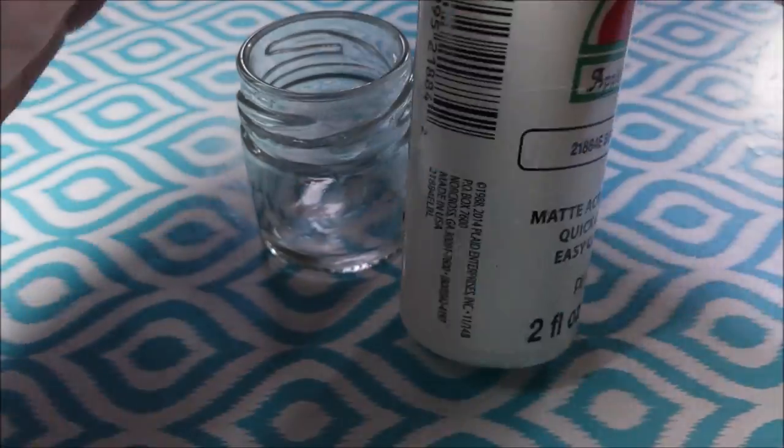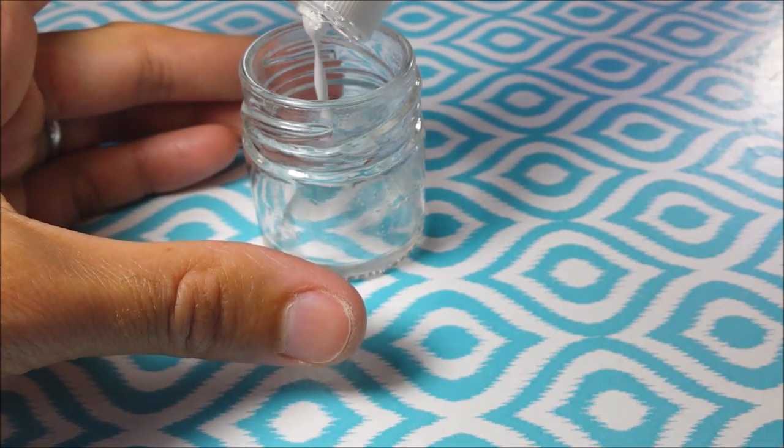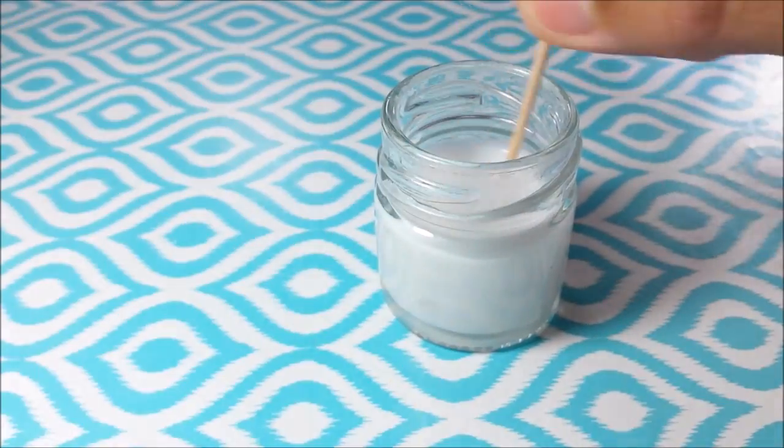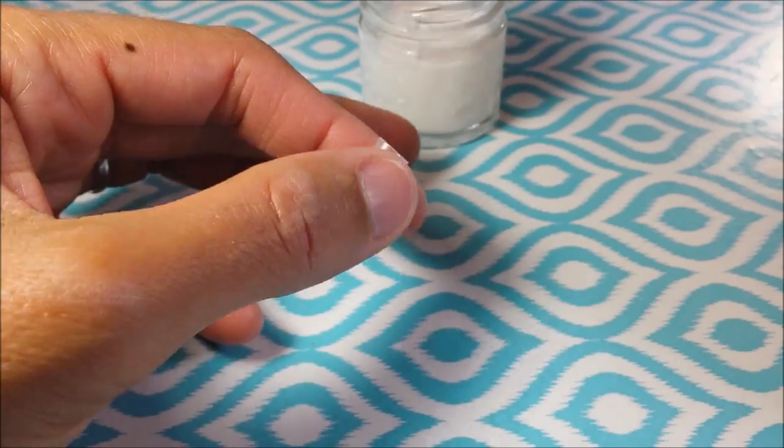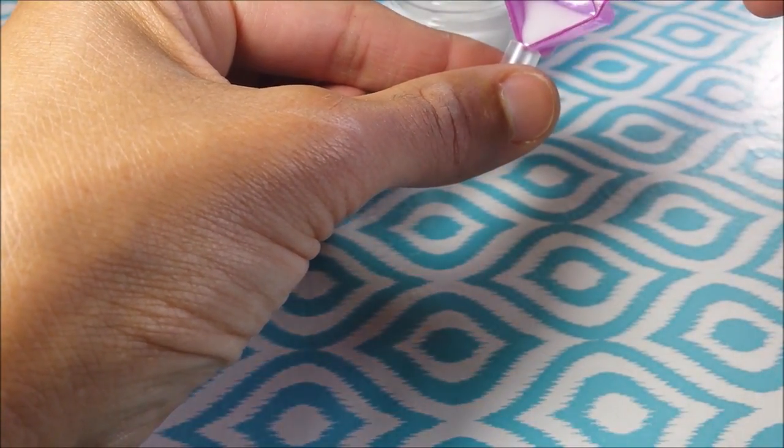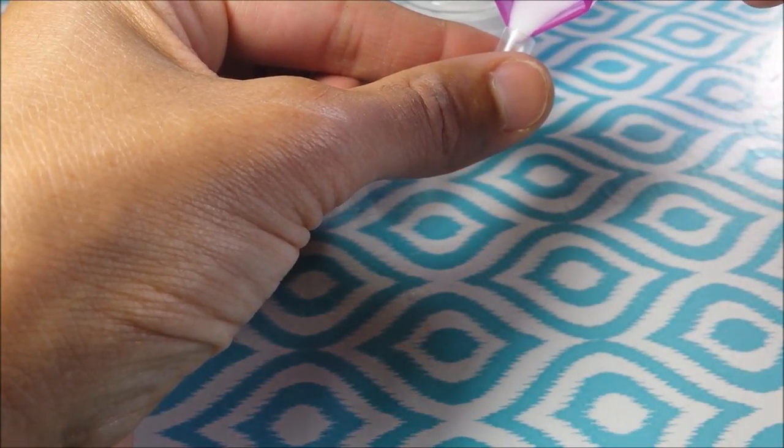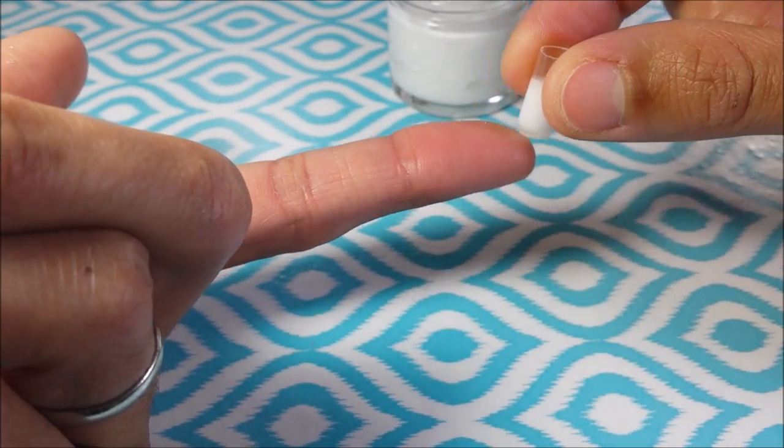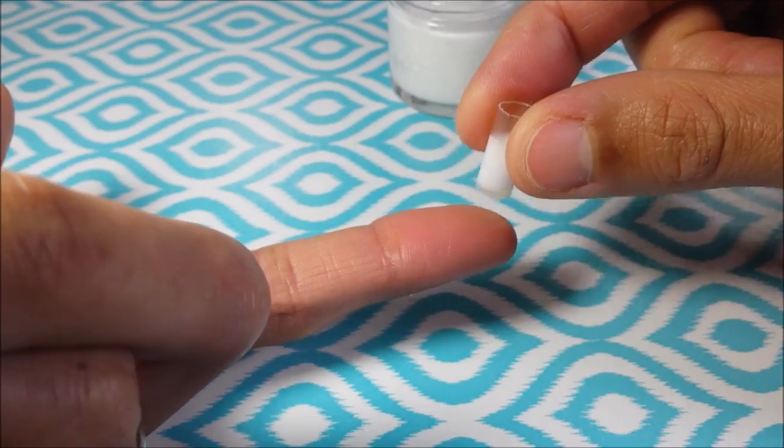Then I squirt in a drop or two of my white paint, add water and stir. And I add that to my bottle. And I confirm that it won't leak.